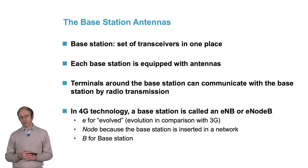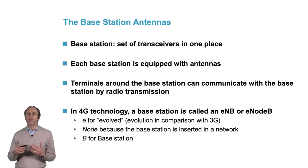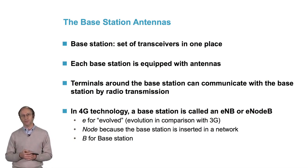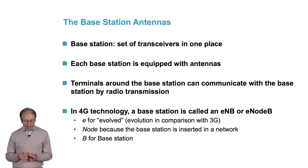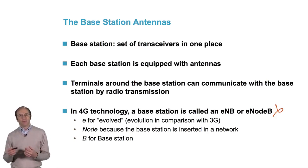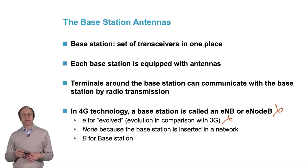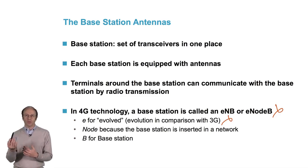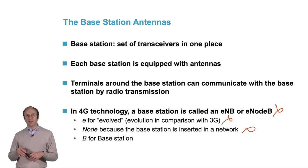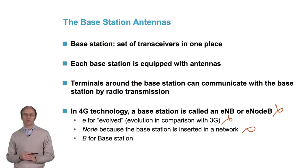Terminals around the base station can communicate with it by radio transmission. In 4G technology, a base station is called an eNodeB — E for evolved, to indicate there has been an evolution in relation to the previous generation; Node, to indicate it is inserted in a network; and B for base station.